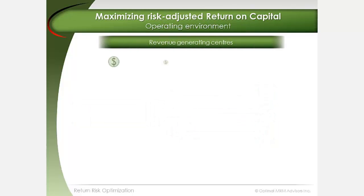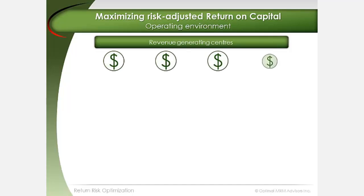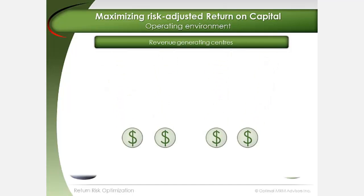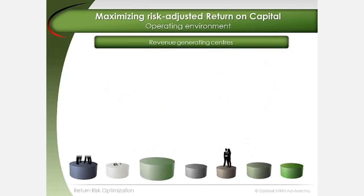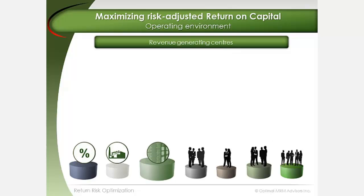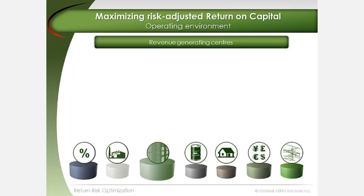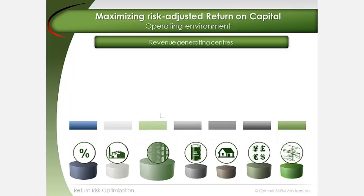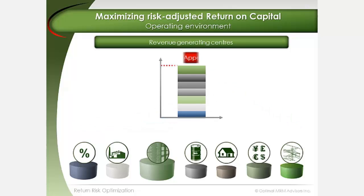Revenue-generating centers often work in different silos. These silos may exist along asset classes such as fixed income, credit, equities, and commodities. The aggregate of all risk limits within which the different silos operate make up the organization's risk appetite.